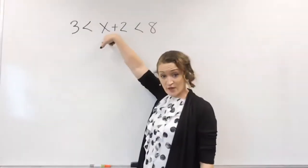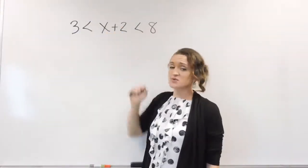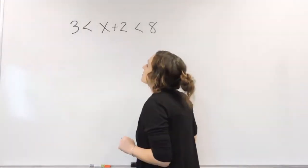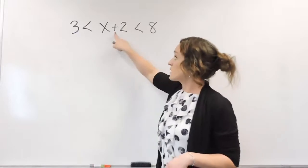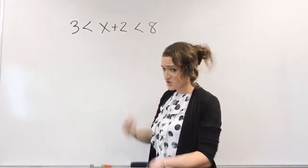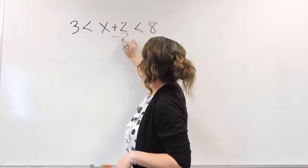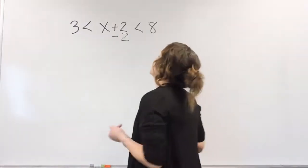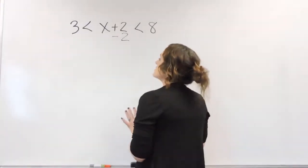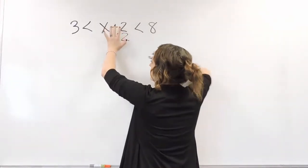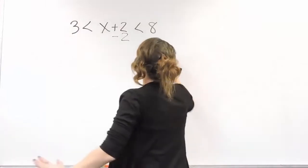So we are solving for x, and we do still need to get x all by itself. In order to get x all by itself, we need to get rid of this positive 2 over here. So just think about solving equations. The opposite of a positive 2 is a negative 2. The only difference here with the three-part inequality is that if I'm going to subtract a 2 here, I need to subtract a 2 everywhere.